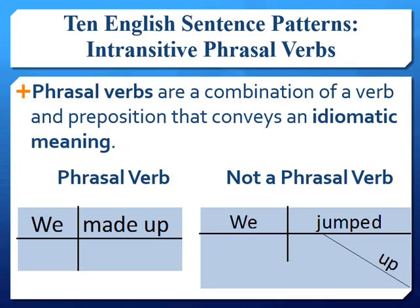The phrasal verb 'made up' has the preposition 'up' that does not correspond with the literal meaning of the word 'up,' but is an essential particle conveying the meaning of reconciled differences. Because the phrasal verb is idiomatic, the meaning from the preposition 'up' attached to the verb 'made' cannot be predicted. However, the combination of the verb 'jumped' and the preposition 'up' does not constitute a phrasal verb because the preposition 'up' adds the predictable meaning of the direction of jumping.